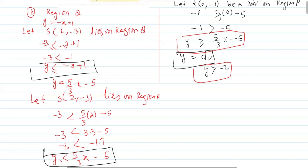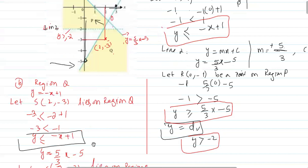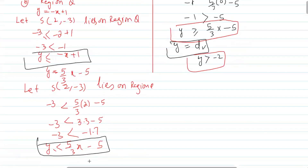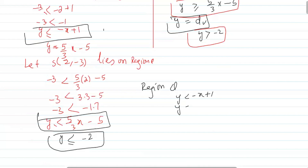The first inequality for region Q was y less than or equal to minus x plus 1. Now for Line 3: the dotted horizontal line y equals minus 2. Region Q is below this dotted line, so y values are less than minus 2. The line is dotted so we do not include equal to, giving the third inequality y less than minus 2. This completes the inequalities for region Q, and that is our solution.